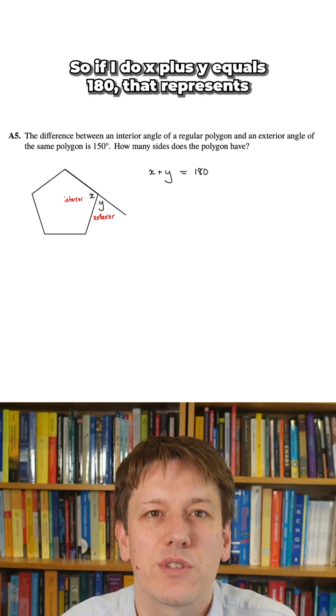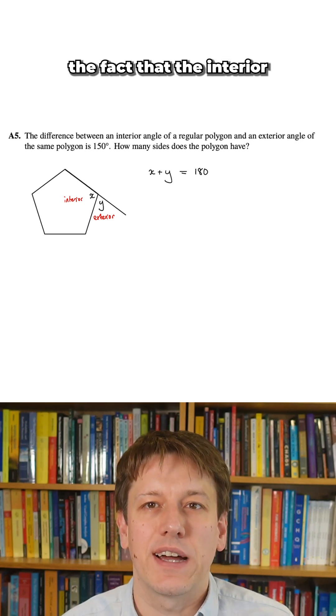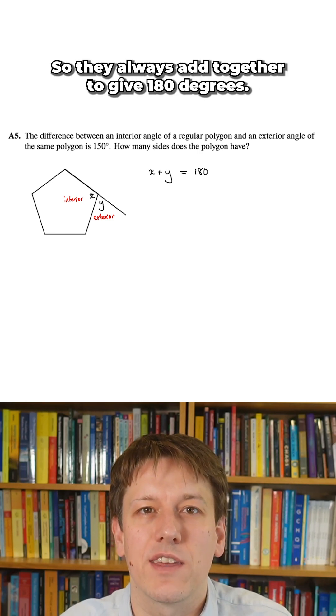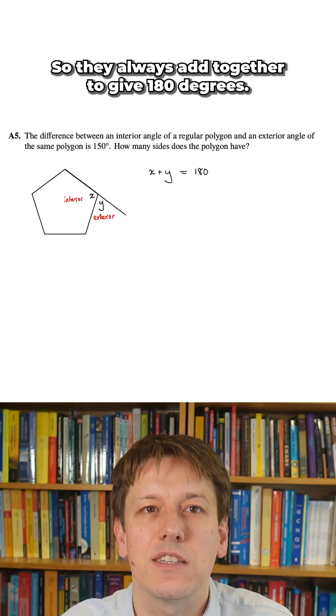So if I do x plus y equals 180, that represents the fact that the interior and exterior angles, regardless of the polygon you start with, always are on a straight line, so they always add together to give 180 degrees.